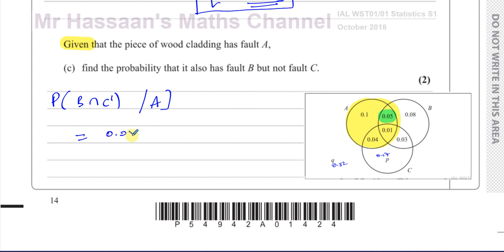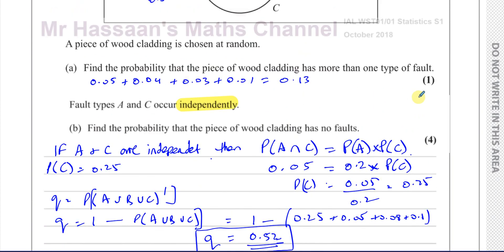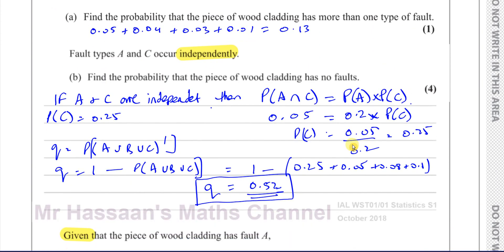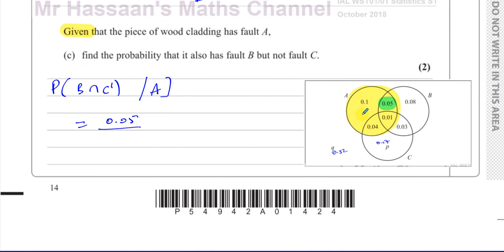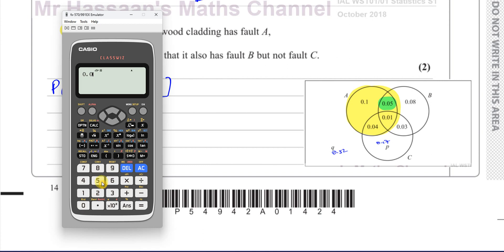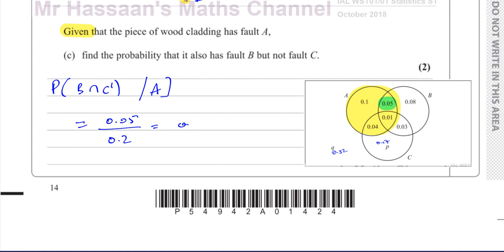So that's 0.05 — not over the whole thing, but over whatever set A is. P(A) = 0.2. So it's going to be 0.05 over 0.2, which gives you one quarter, which is 0.25. And there's the answer for this question.